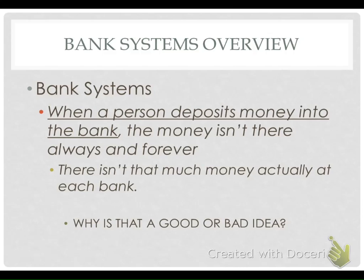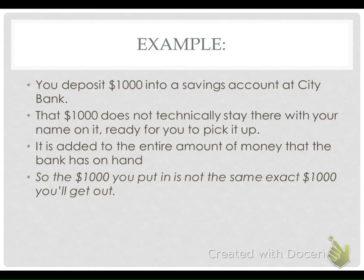Next we're going to look at a bank system — how banks work and a potential problem we could have with a bank. The definition of a bank system is when people deposit money into the bank. Banks are there for us to hold our money, but just because you put the money there doesn't mean it's always there 100% of the time. There isn't actually much money at each bank. For example, you deposit $1,000 into a savings account at Citibank — that $1,000 is added to the entire amount of money the bank has on hand, usually locked up in the vault.